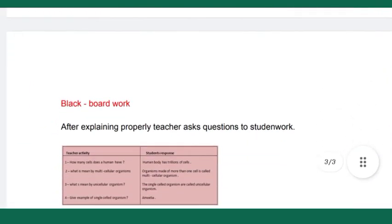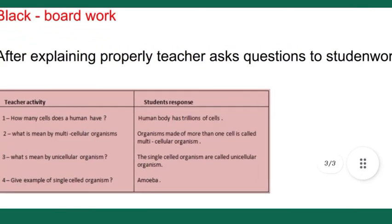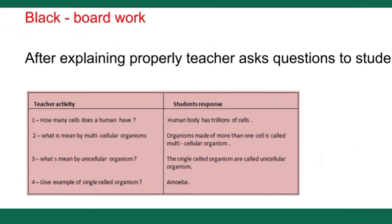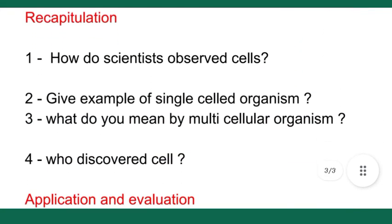After this, we have to again explain everything properly to students. After this, we have to ask questions to students. Here I have added four questions, and here are the expected answers that we expect from students. You can see here: 'How many cells does a human have?' 'What is meant by multicellular organisms?' 'What is meant by unicellular organisms?' 'Give example of single-celled organisms.' Like this we have to ask questions to students.